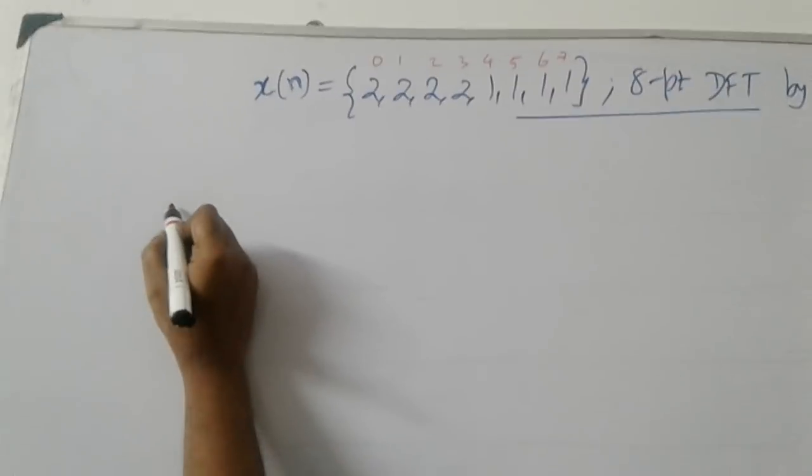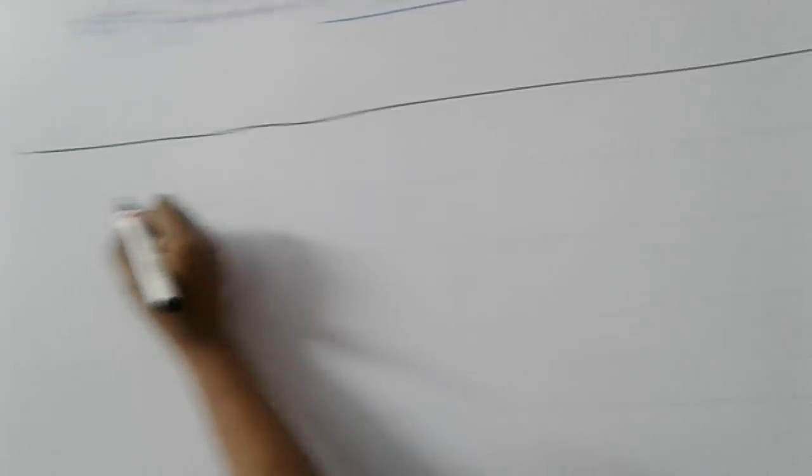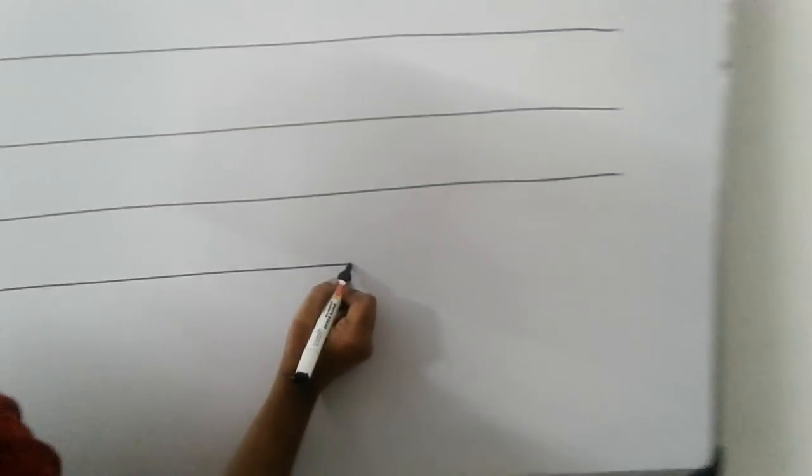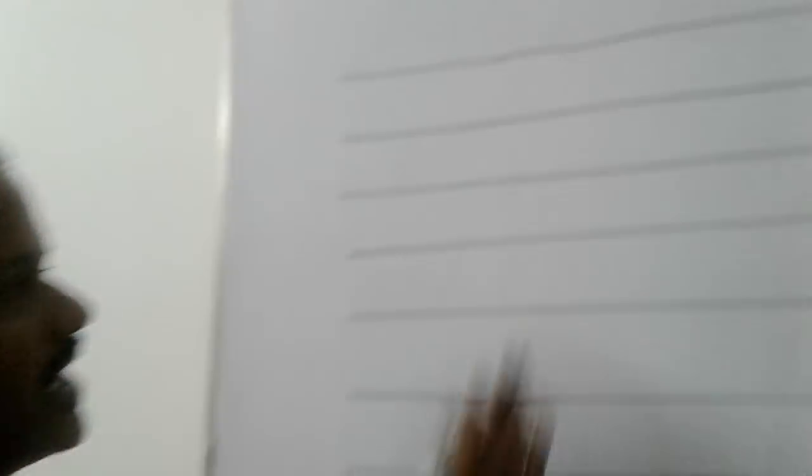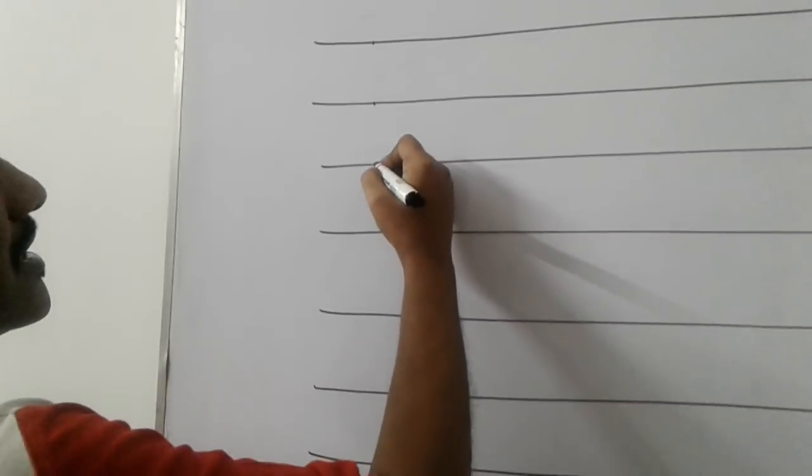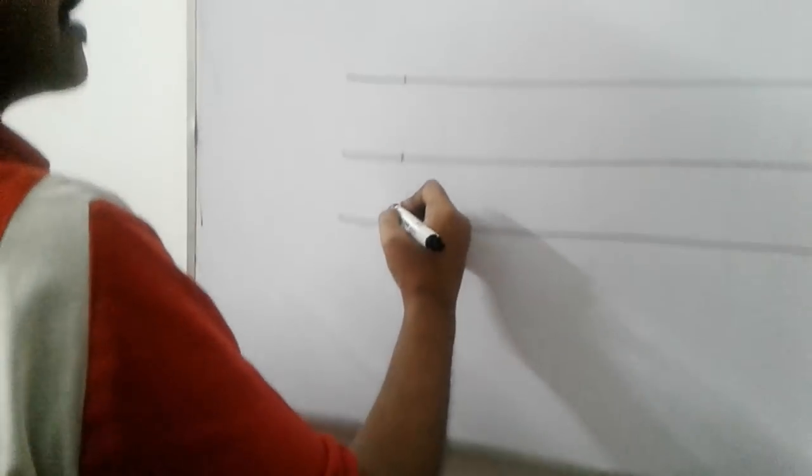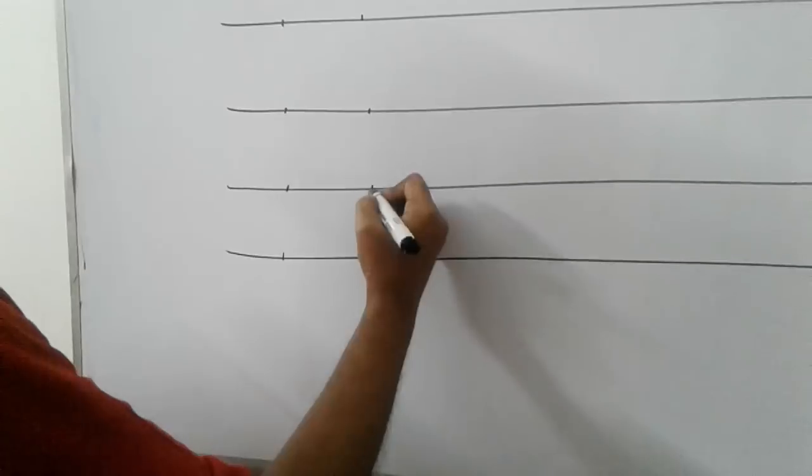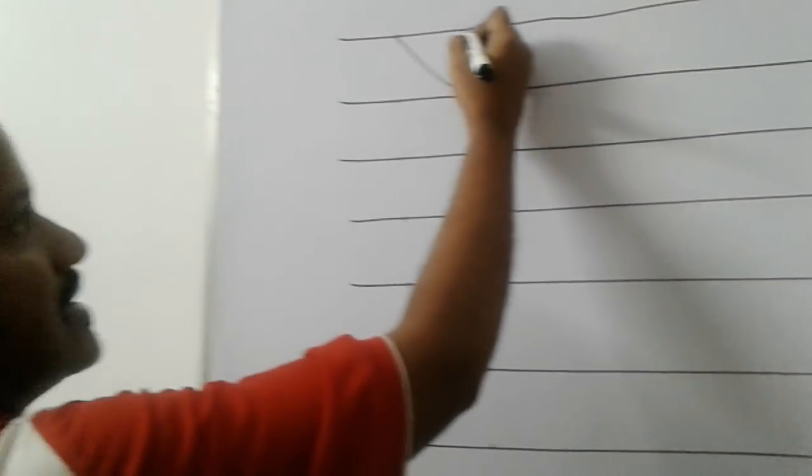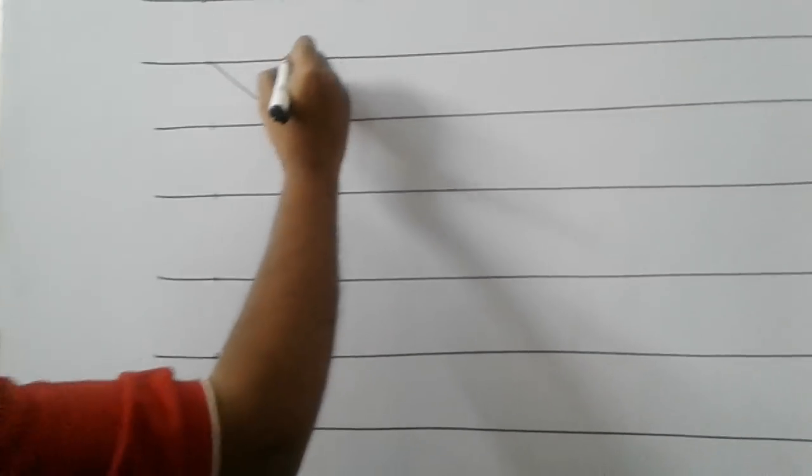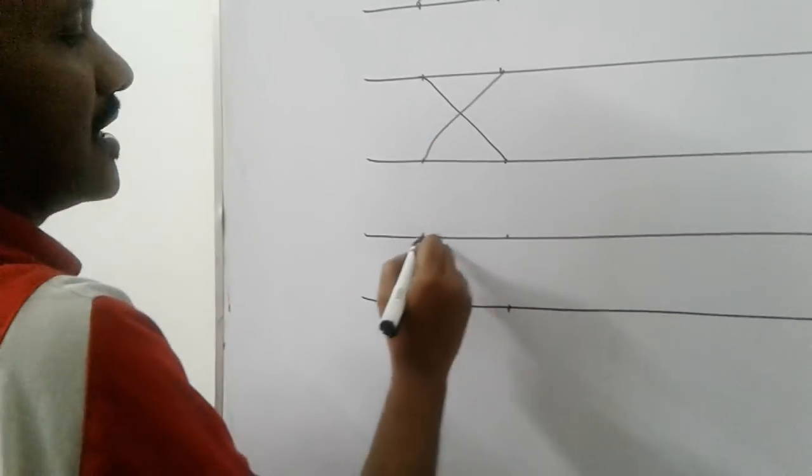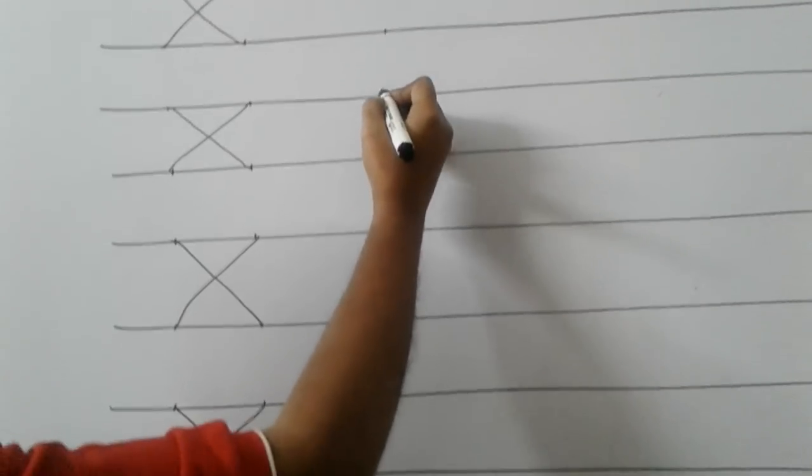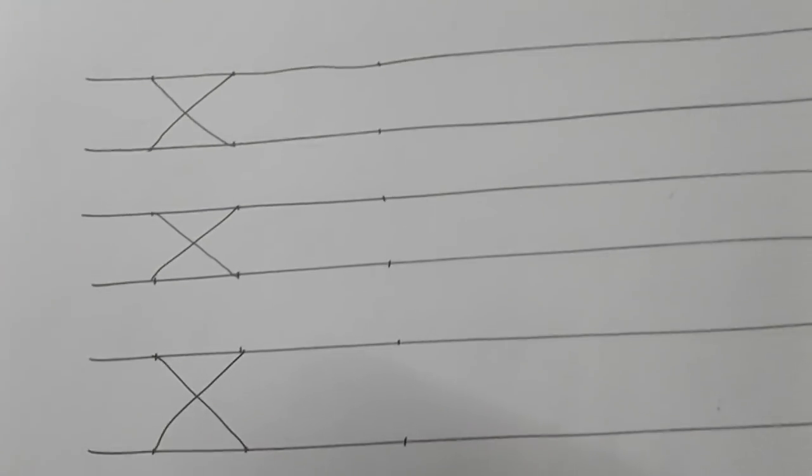So how to proceed with the problem. Since it is 8 point we have to draw 8 horizontal lines. Better to draw with a pencil. Now after drawing 8 lines we have to mark 8 dots like this. Then again 8 dots here. Then leave some gap. Again draw 8 dots.